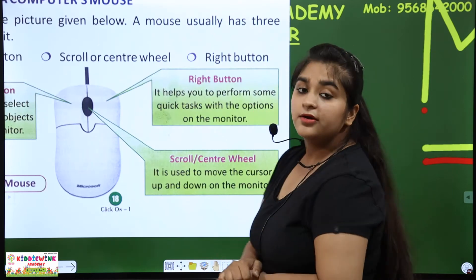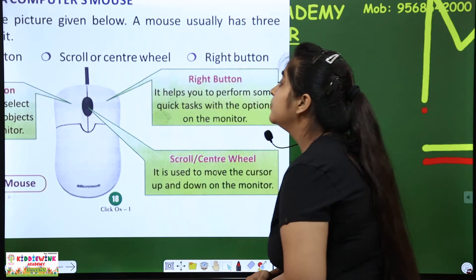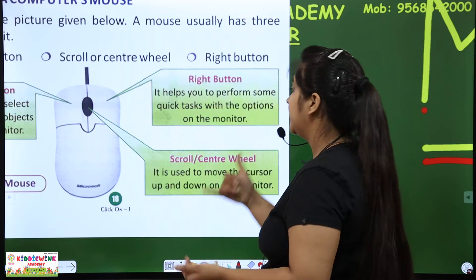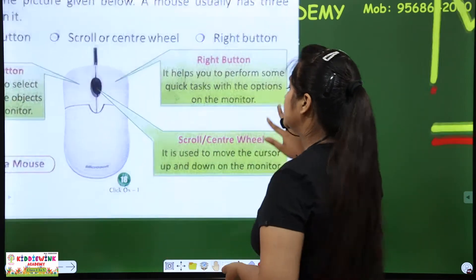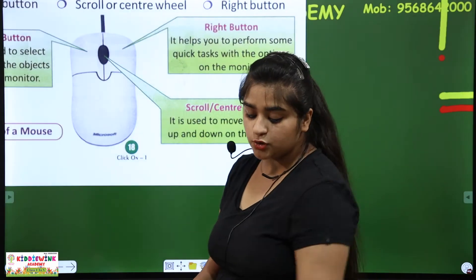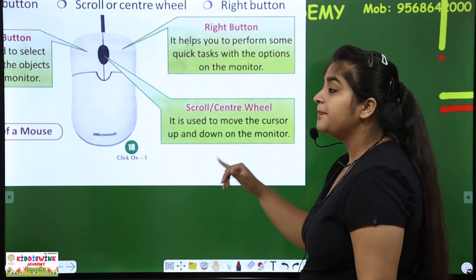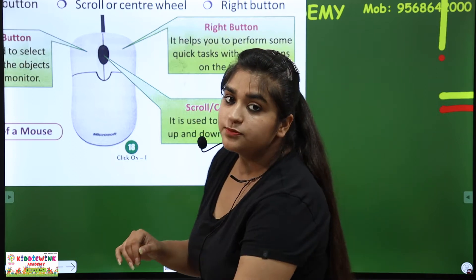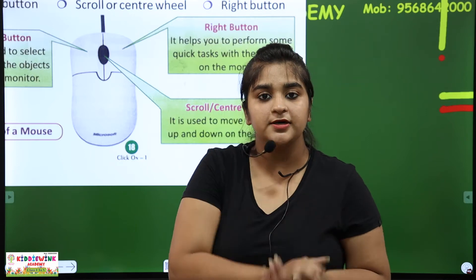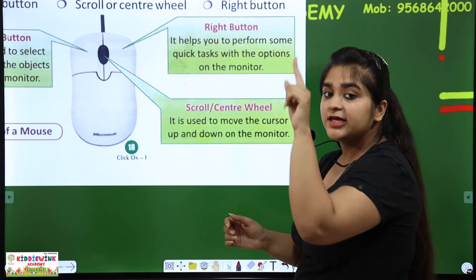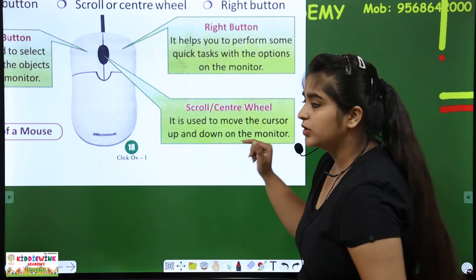Next is the right button — it helps you to perform some quick tasks, which means we can work faster with the options on the monitor screen. Scroll and center wheel — it is used to move the cursor up and down on the monitor. When we use the mouse, we create an arrow on our monitor, which is the cursor moving up and down.